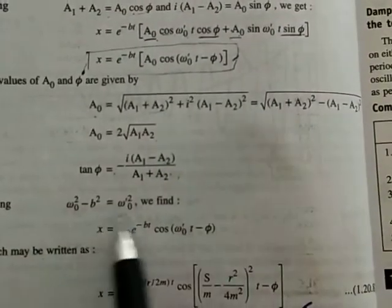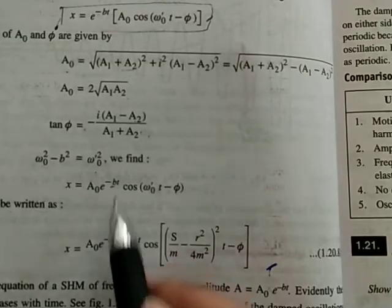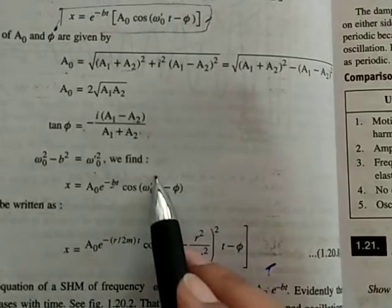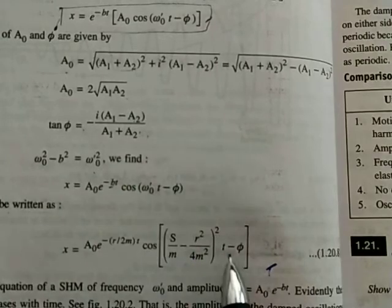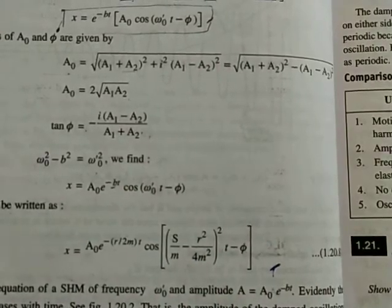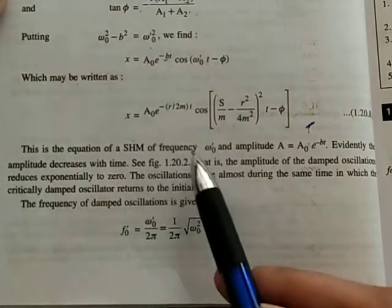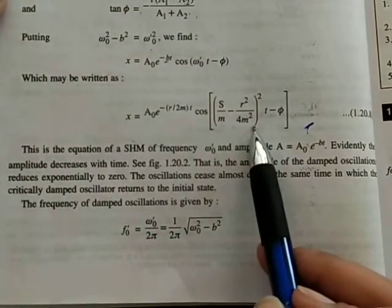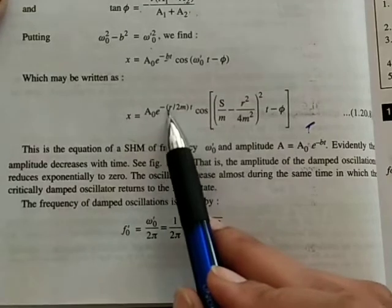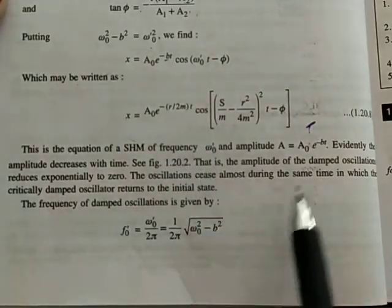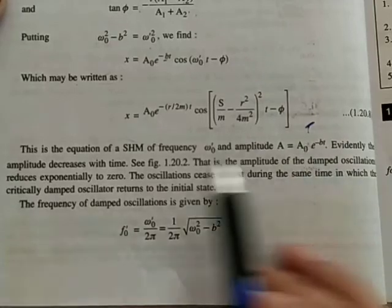Substituting all values — b = r/2m and ω₀' = √(s/m − r²/4m²) — we obtain the final equation. This is the equation of simple harmonic motion with angular frequency ω₀', and its amplitude is a₀·e^(−bt) = a₀·e^(−rt/2m). The amplitude decreases exponentially with time.